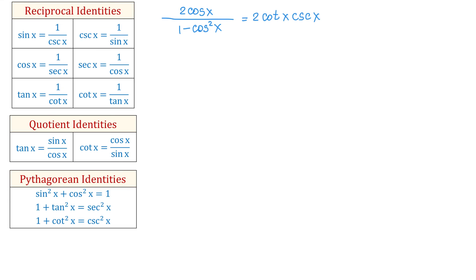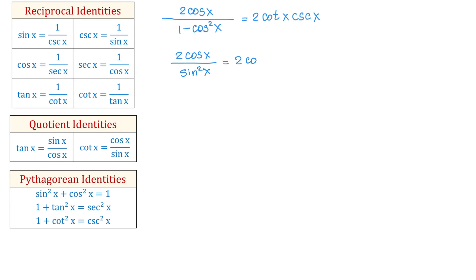In the next step, we will use the first Pythagorean identity: sine squared of x plus cosine squared of x equals 1. In this identity, if we take 1 and subtract cosine squared of x, we get sine squared of x. So we will replace 1 minus cosine squared of x with sine squared of x. Then we write 2 cosine of x over sine squared of x equals 2 cotangent of x cosecant of x.